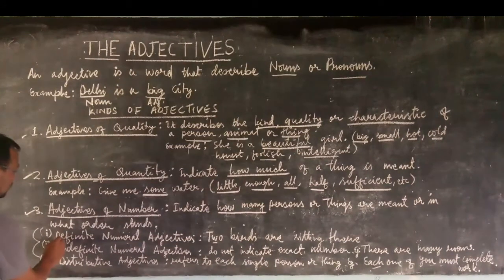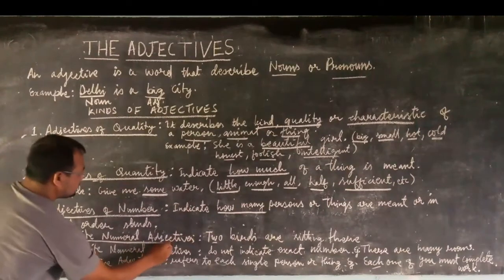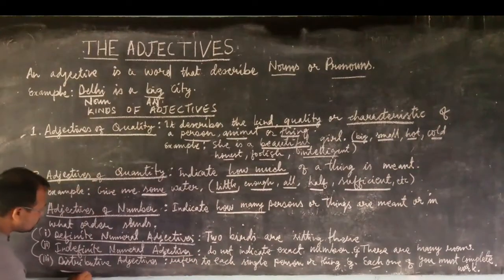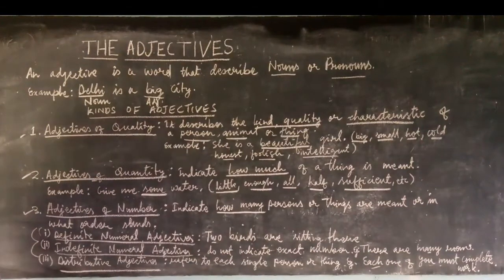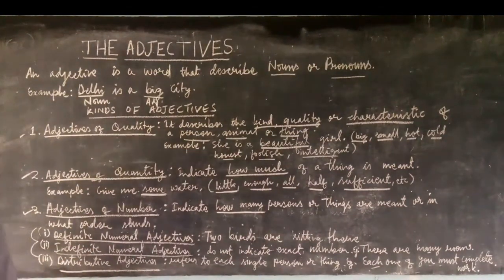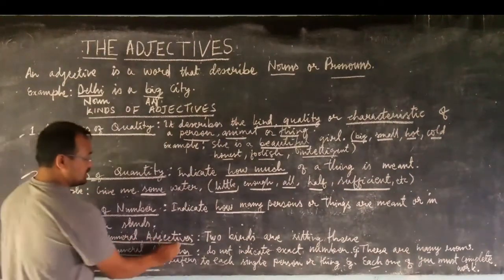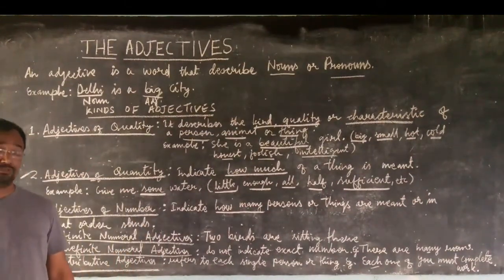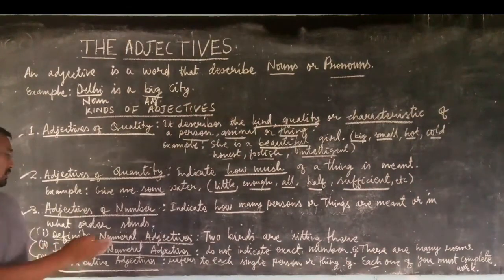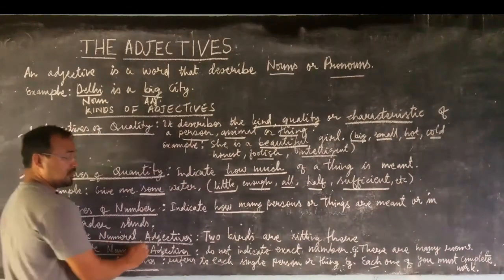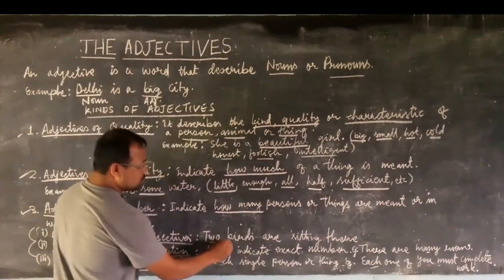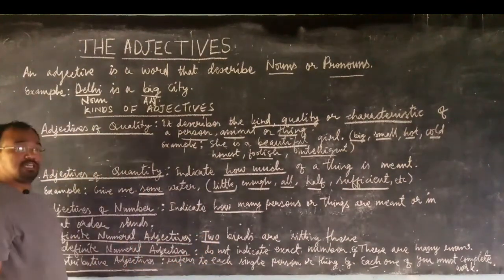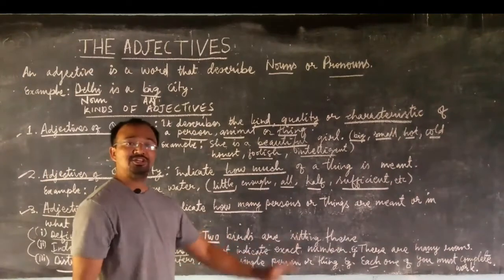The three categories of adjective of number are: definite numeral adjectives, indefinite numeral adjectives, and distributive adjectives. A definite numeral adjective indicates an exact number — like one, two, three, four, five, six. For example, 'Two birds are sitting there' — here the word 'two' indicates an exact number and is therefore a definite numeral adjective.